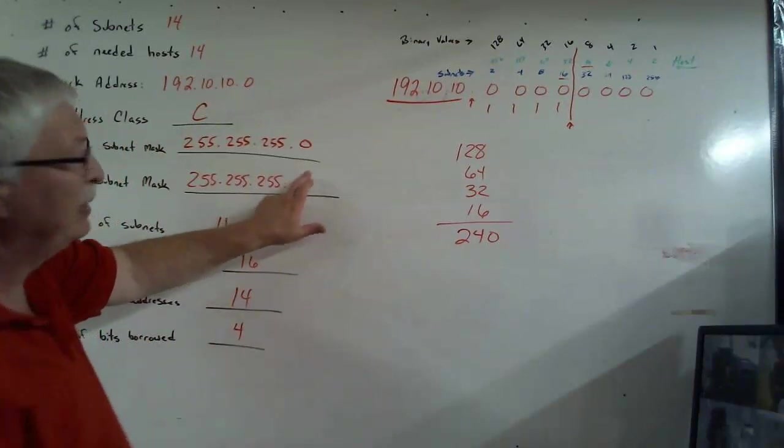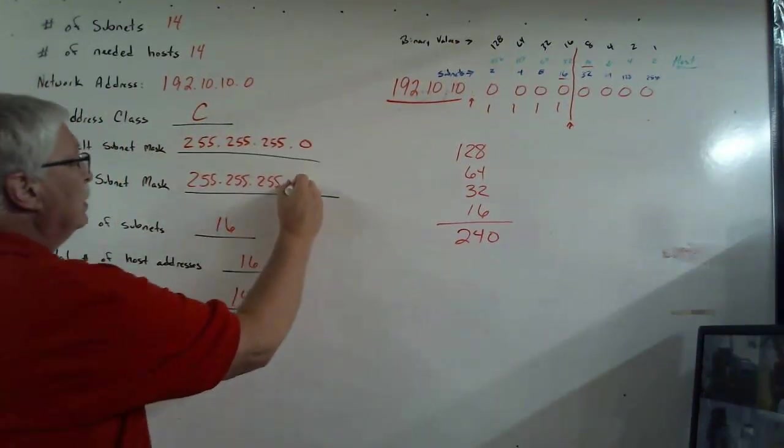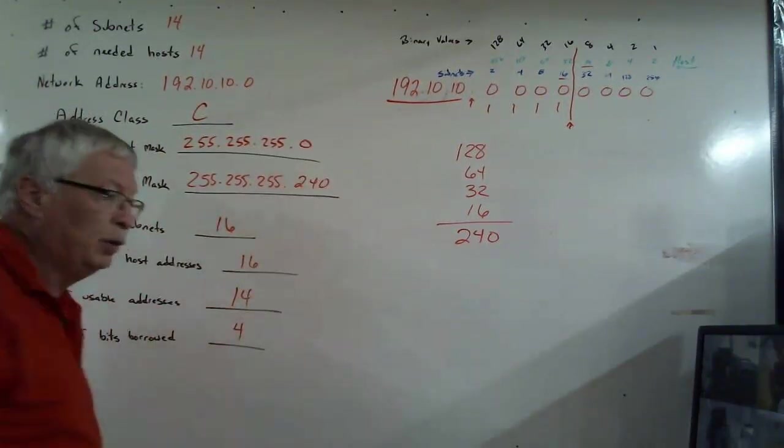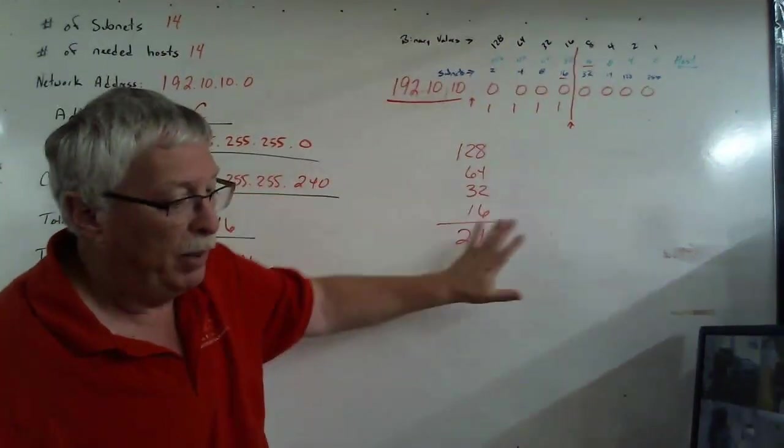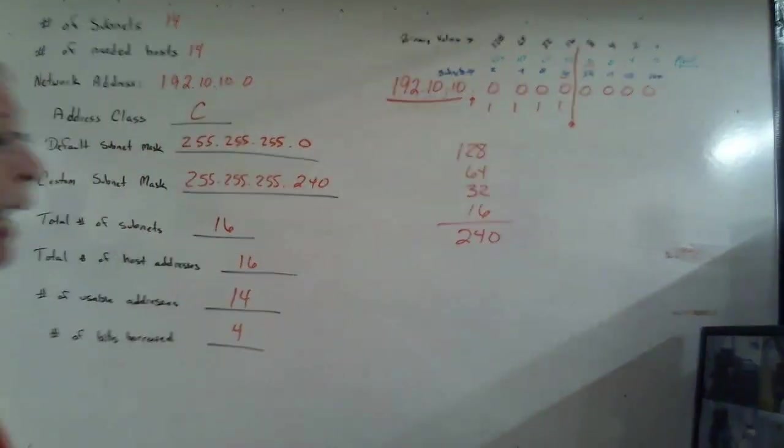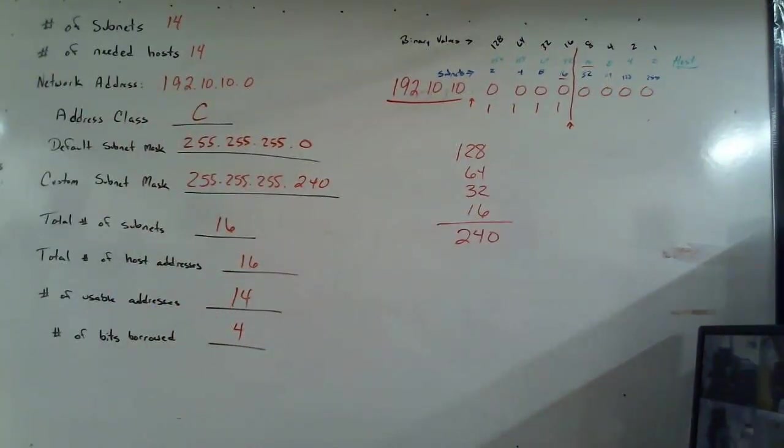What does that come out to? That comes out to 240. So again, the last number in our custom subnet mask is 240. And this is exactly what we have done in that last packet. But I'm going to pause this for just a second. I'm going to change a little bit of what you see here on the right-hand side, and we're going to answer some more specific questions to help us put our network together or our set of subnets.